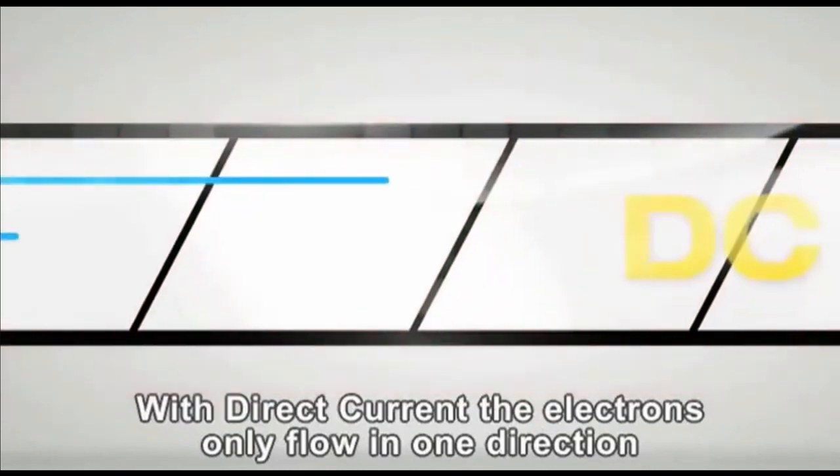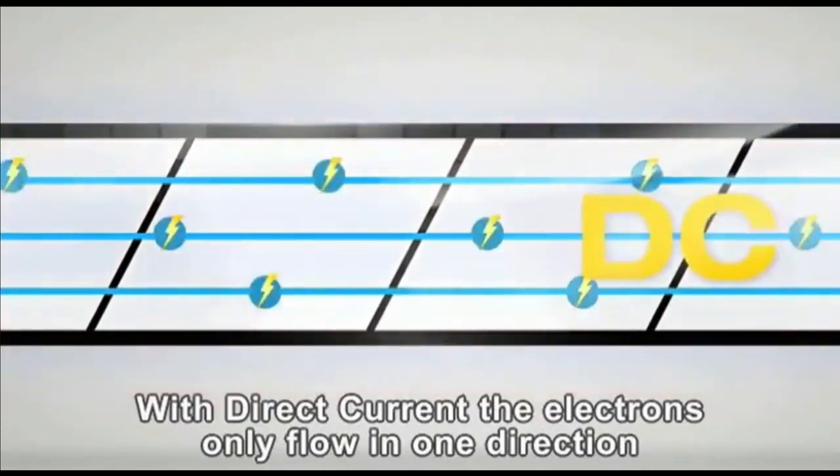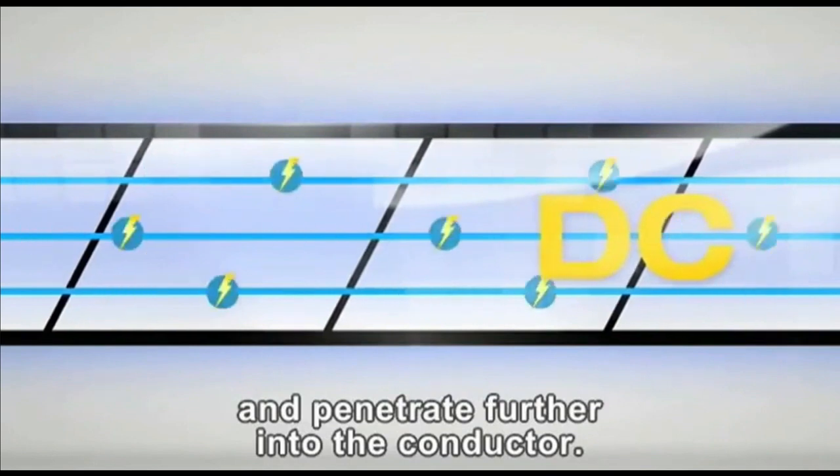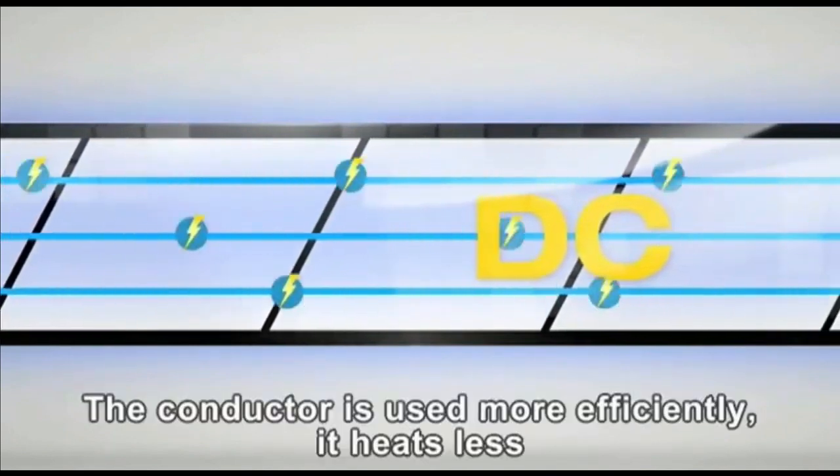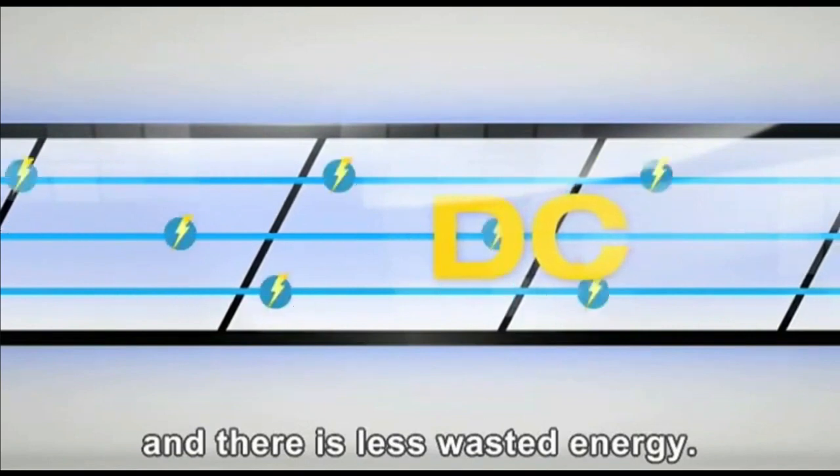With direct current, the electrons only flow in one direction and penetrate further into the conductor. The conductor is used more efficiently, it heats less, and there is less wasted energy.